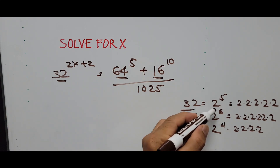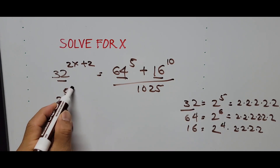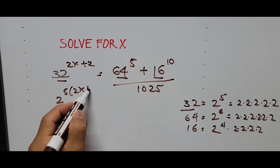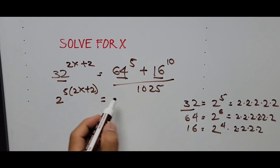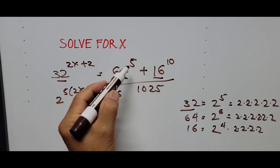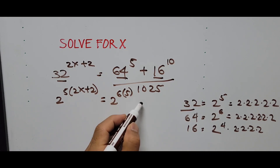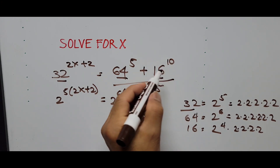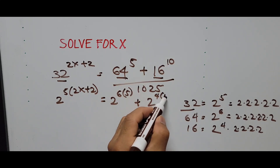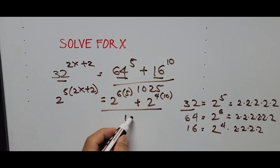So 32 is 2 to the fifth power, raised to the exponent 2x plus 2. Equals: 64 is 2 to the sixth power, with the power of 5, so we multiply by 5. Then plus 16 is 2 to the fourth power, raised to the exponent 10, so multiply by 10. And that's divided by 1025.